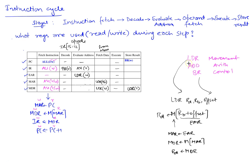What about ADD? ADD doesn't have anything to do in evaluate address — we don't evaluate any address. There's nothing to go to memory for in operand fetch. During execute, ADD does change some destination registers, but those aren't in the set of registers we're tracking here. So ADD doesn't affect any of these registers in execute or store result.